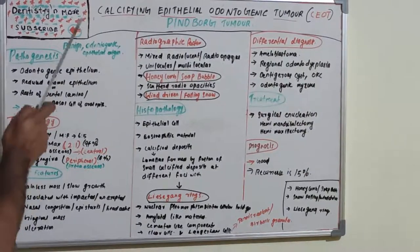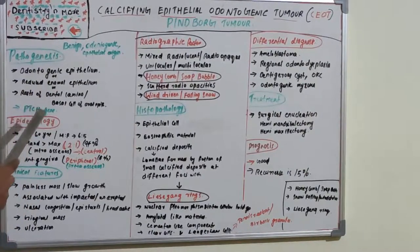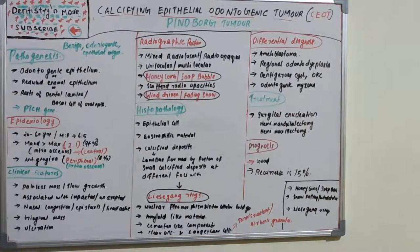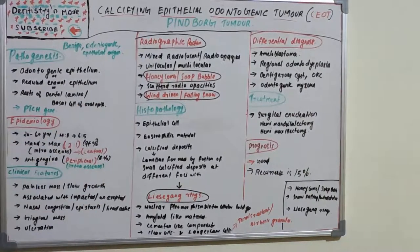Sometimes, if surgical removal is performed, underlying bony depression or saucerization has been seen in some cases. So those are the clinical features — covering pathogenesis, epidemiology, and clinical features. Now let's move on to the radiographic features.